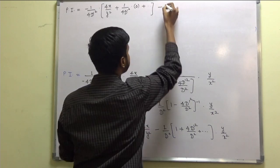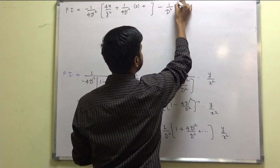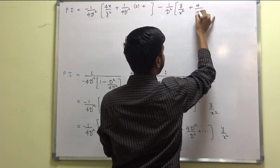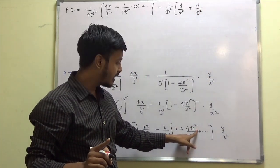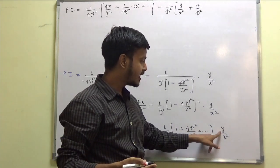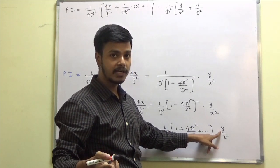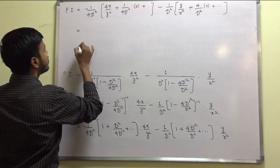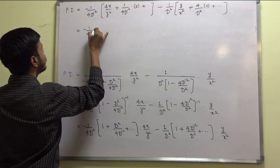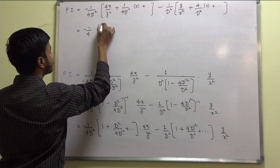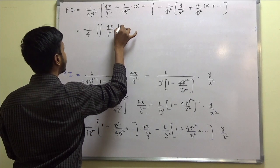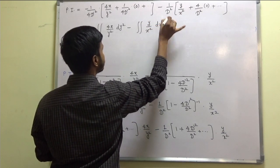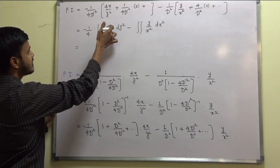We remain with: minus 1/(4D'²) operating on 4x/y² minus 1/D² operating on y/x². Here D' stands for derivative with respect to y twice. The derivative of y with respect to y once is 1, and twice is 0 — so that term is 0. The rest of the terms all contribute to 0.